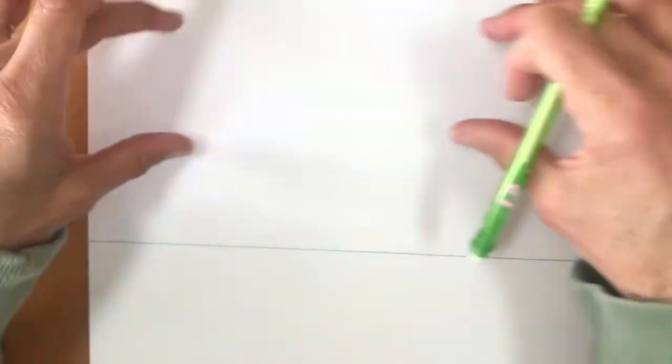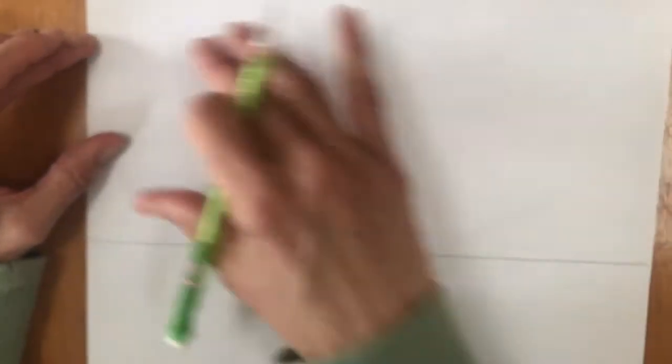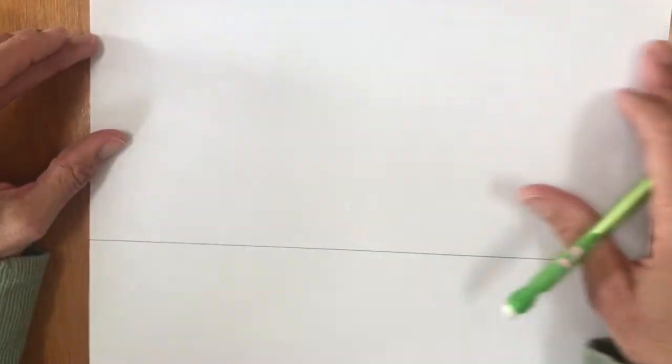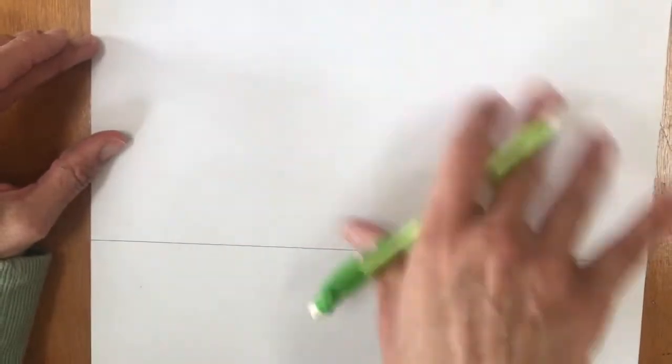If it's going to be a shorter word you can hold it either way and then you want to just sort of space out your letters so that you have room for all of them. If it's a longer word draw really lightly so that if you need to erase and reformat a little bit you can do that. I am going to do the word art.